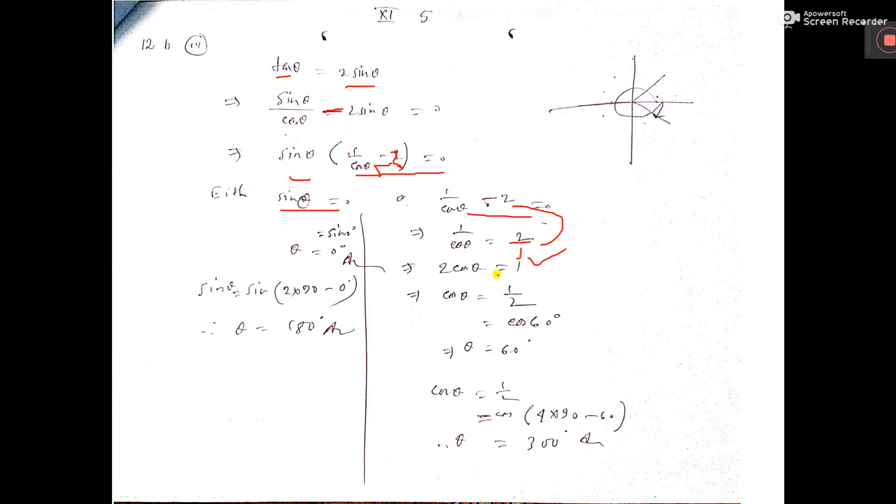So cos θ = 1/2 = cos 60°. In the first quadrant, θ = 60°.